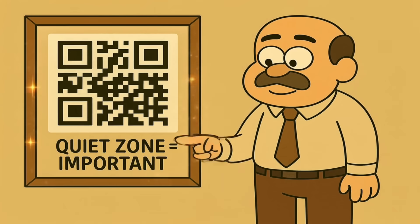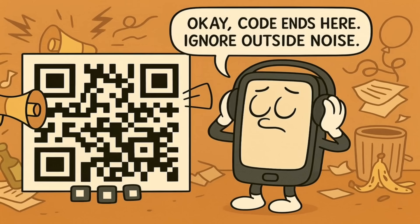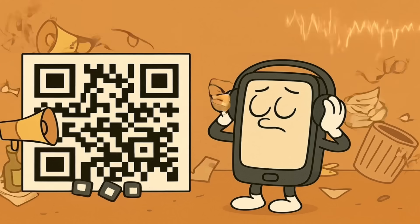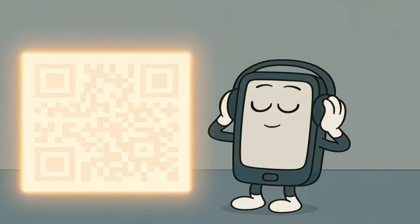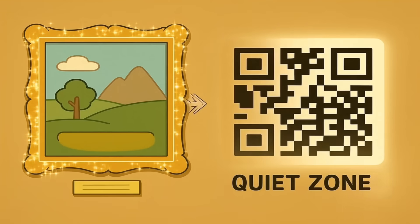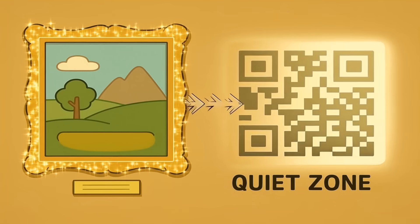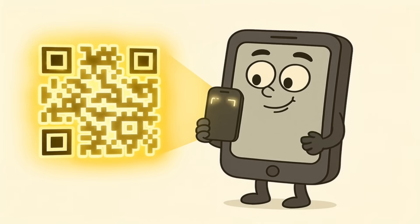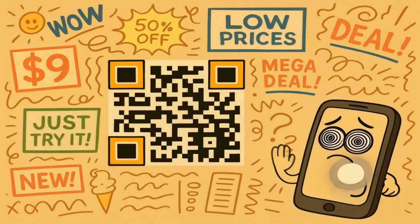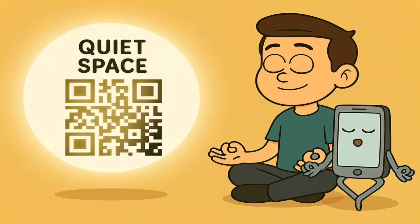There's one more simple part to notice: the blank space all around the QR code. That boring white border is called the quiet zone, and it's actually very important. The quiet zone is exactly what it sounds like — a silent area that tells the phone's translator, okay, the code is over. Everything outside of this border is just noise, ignore it. It's like putting a frame around a painting — the frame tells you where the art is. The quiet zone tells the camera where the code is, and your phone needs a little bit of clear, empty space to properly identify the finder patterns. If you have text or images right up against the edges of the QR code, your phone can get confused and might not be able to read it at all. It needs that quiet space to think.